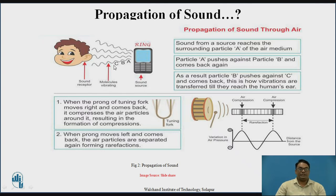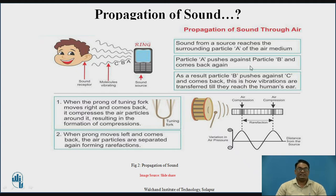Points A, B, and C denote the positions of the person. When standing nearer to the phone, the person hears the sound very clearly. As the person moves to point B, the sound gets decreased, and so on. We can conclude that as we move away from the source, the sound gets decreased. Sound from the source reaches surrounding particle A; particle A then pushes against particle B and comes back to its original position. Particle B then pushes particle C and returns to its original position. This is how vibrations are transferred from the source towards the human ear.